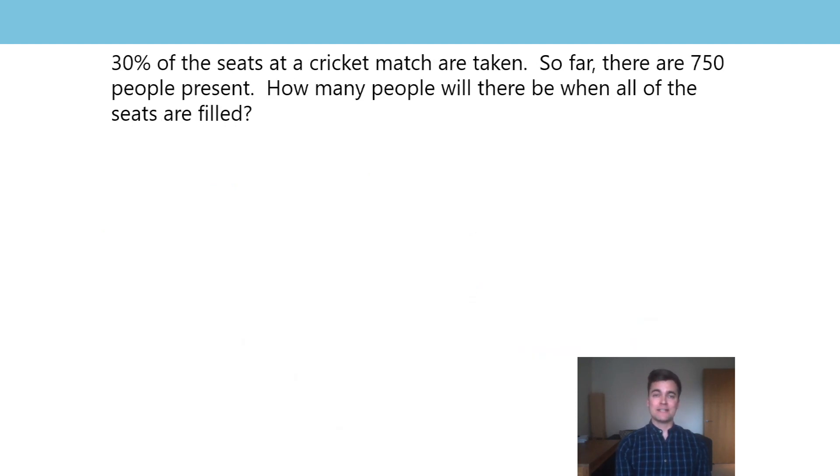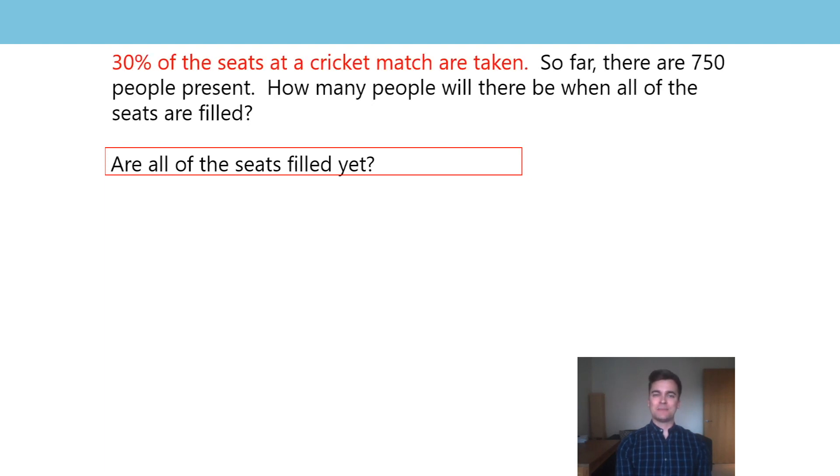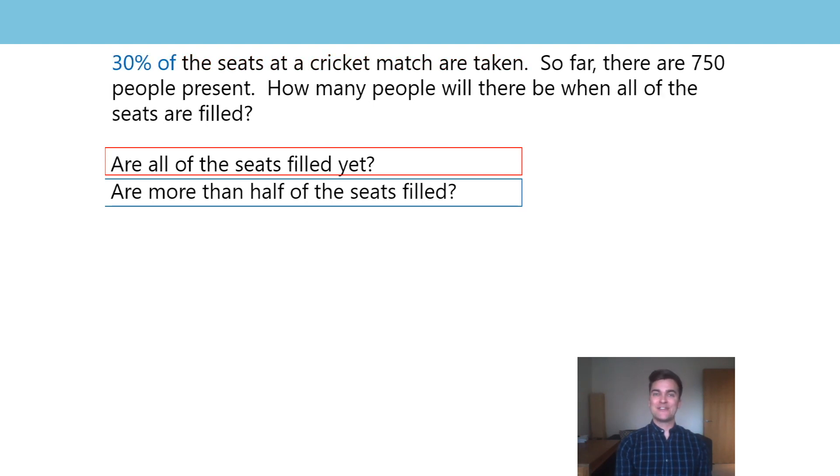Here's a second problem for you. Let's have a read. 30% of the seats at a cricket match are taken. So far, there are 750 people present. How many people will there be when all of the seats are filled? So that's the question you're being asked, but let's break it down and check we understand the problem. Are all of the seats filled yet? What do you think? No? And what's telling you no? Only 30% have been taken so far. So what percentage are free? 70%. Are more than half of the seats filled? What do you think? No. What percentage are filled? No. 30%. What percentage is half? 50%. So no, not yet half. Less than half filled.